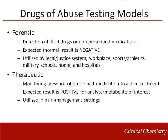There are two main models of drugs of abuse testing: forensic and therapeutic. The forensic model is focused on detection of illicit drugs or non-prescribed medications, and the normal result is a negative. This model is most commonly referred to as urine drug screening and is used in criminal situations, for workplace testing, to screen athletes and military personnel, in addition to use in domestic situations.